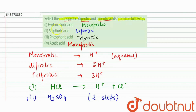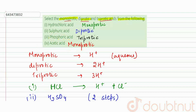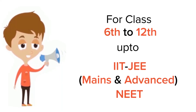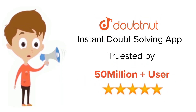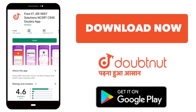So our answers are: hydrochloric acid — monoprotic; sulfuric acid — diprotic; phosphoric acid — triprotic; acetic acid — monoprotic. These are our required answers.